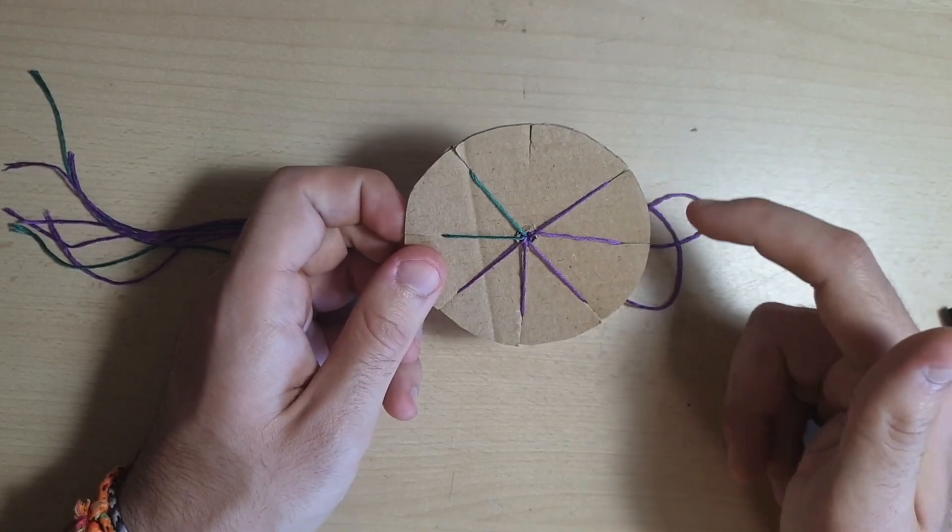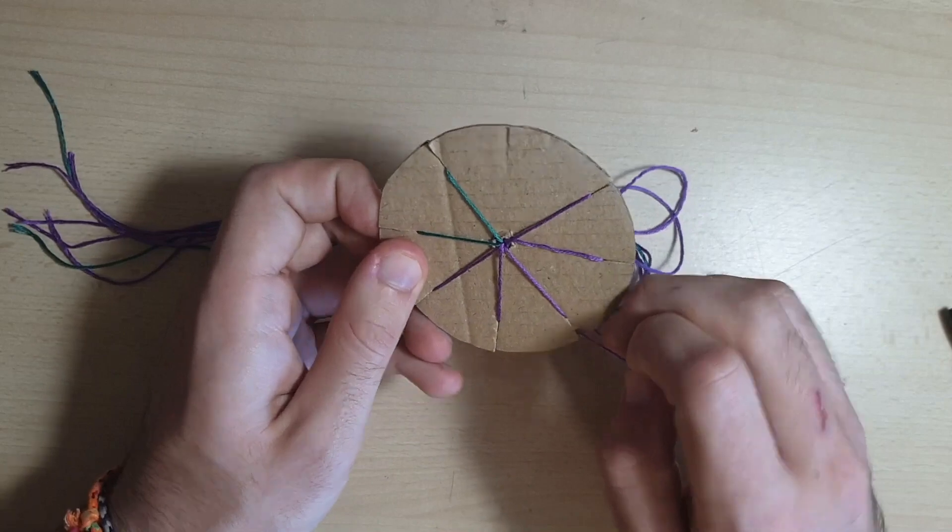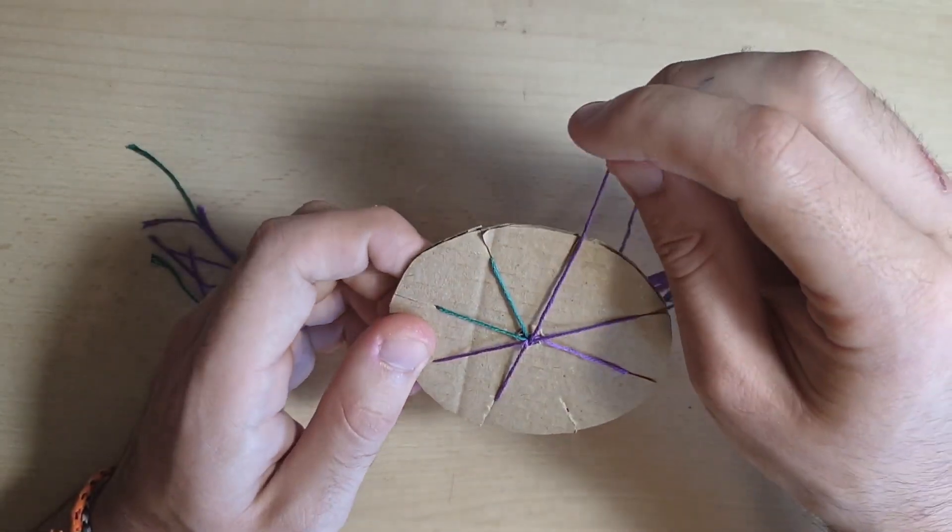Then you count to the right, one, two, three, and you take the third string out, and you put it into the empty slot.